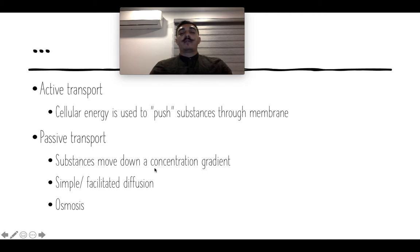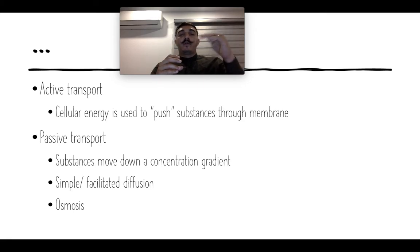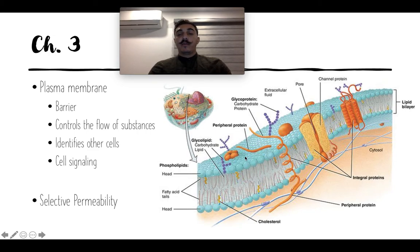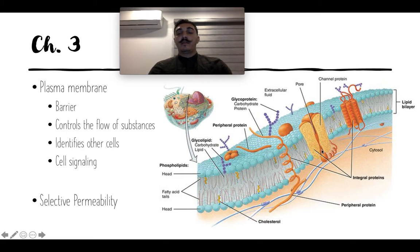Passive transport includes simple diffusion and facilitated diffusion. Simple diffusion is something just simply going through the membrane without needing any help or proteins. Facilitated diffusion uses a protein to facilitate movement into or out of the cell — still with no energy because it's passive. Active transport would be turning on a protein to push something through, opening it up and pushing it inside or outside the cell.